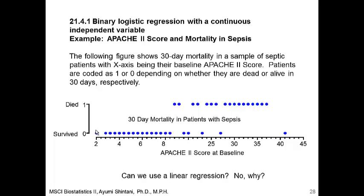This patient has an Apache score of 2 and, as expected, this patient survived. This patient has an Apache score of 10 and this patient died. This patient's Apache score is 25 and died within 30 days. And there is one patient whose Apache score is actually the worst of all patients, but this patient survived.